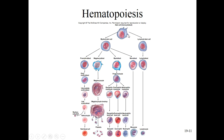Hemocytoblasts in the placenta and fetus begin to differentiate into lymphoid and myeloid stem cells. In the bone marrow of adults, we still find many of these differentiating into specific types of white blood cells, red blood cells, and platelets coming from the megakaryoblast. For the test, you should know what these precursors are and what they become: pro-erythroblasts become red blood cells, megakaryoblasts become megakaryocytes which break apart to form platelets, myeloblasts become granulocytes, monoblasts become monocytes, and lymphoblasts become lymphocytes.